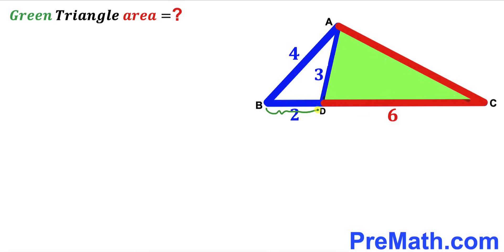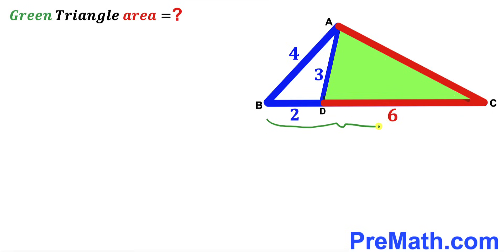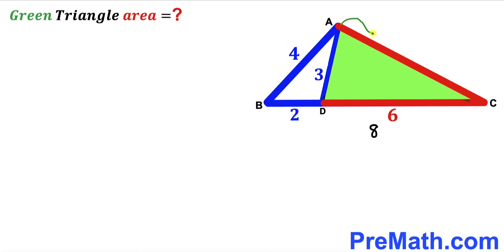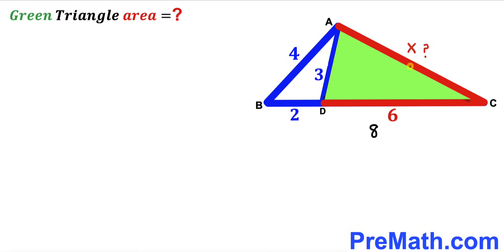We know segment BD length is 2 units and segment CD length is 6, so the whole BC length is 2 plus 6, making 8 units. Now let's focus on side AC — its length is unknown and I'm going to represent it as x. We need to find the value of x before we can calculate the area of the green shaded triangle.